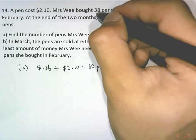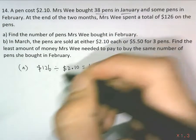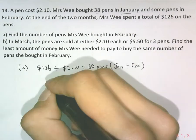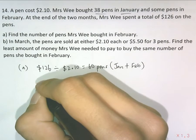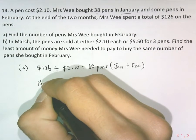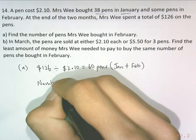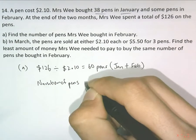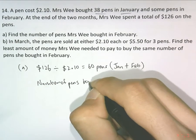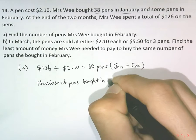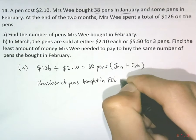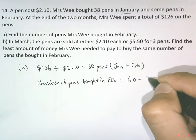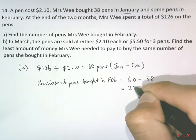Since she bought 38 pens in January, for Part A — the number of pens Mrs. Wee bought in February — the number of pens bought in February will be 60 minus 38, which is 22.